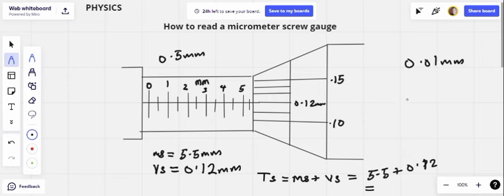When you do 5.5 plus 0.12, here is 2, here is 6, and here is 5. So our total reading on this micrometer screw gauge is 5.62 millimeters.